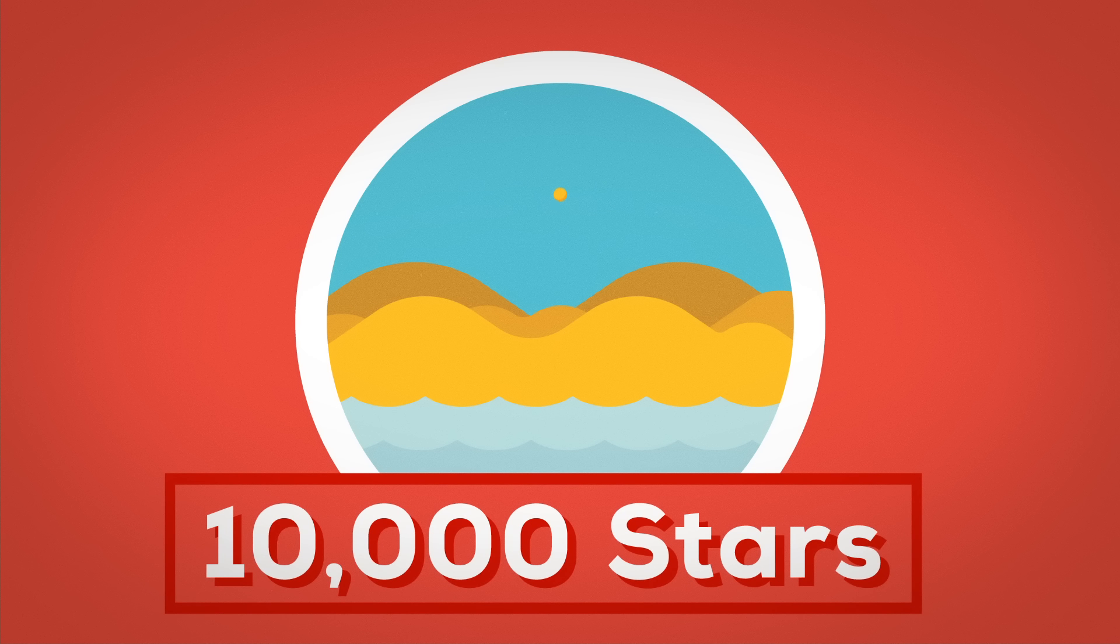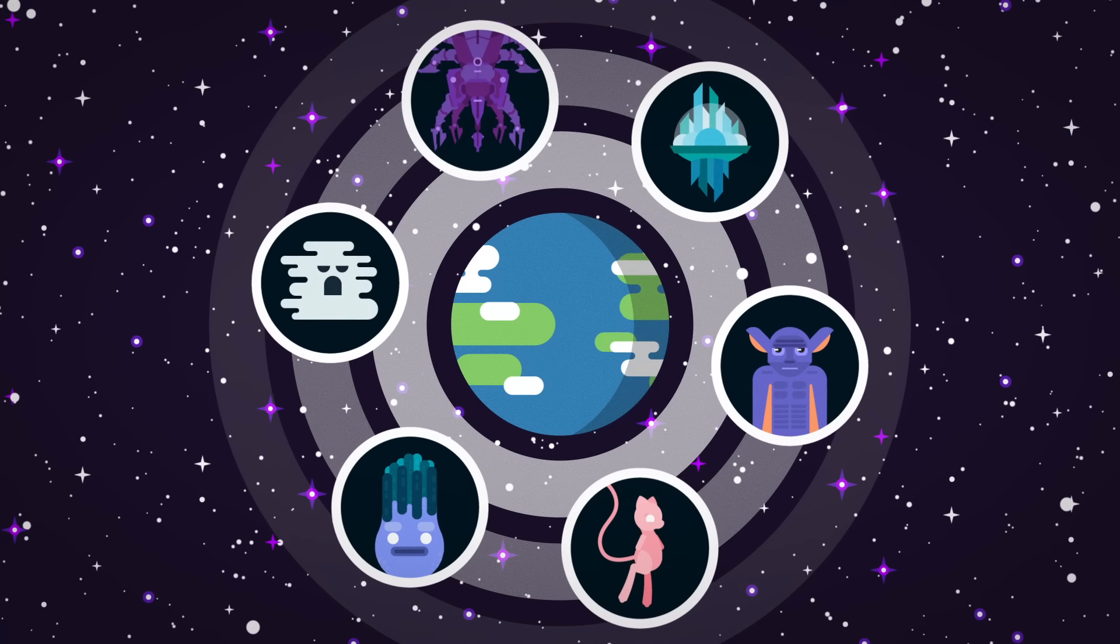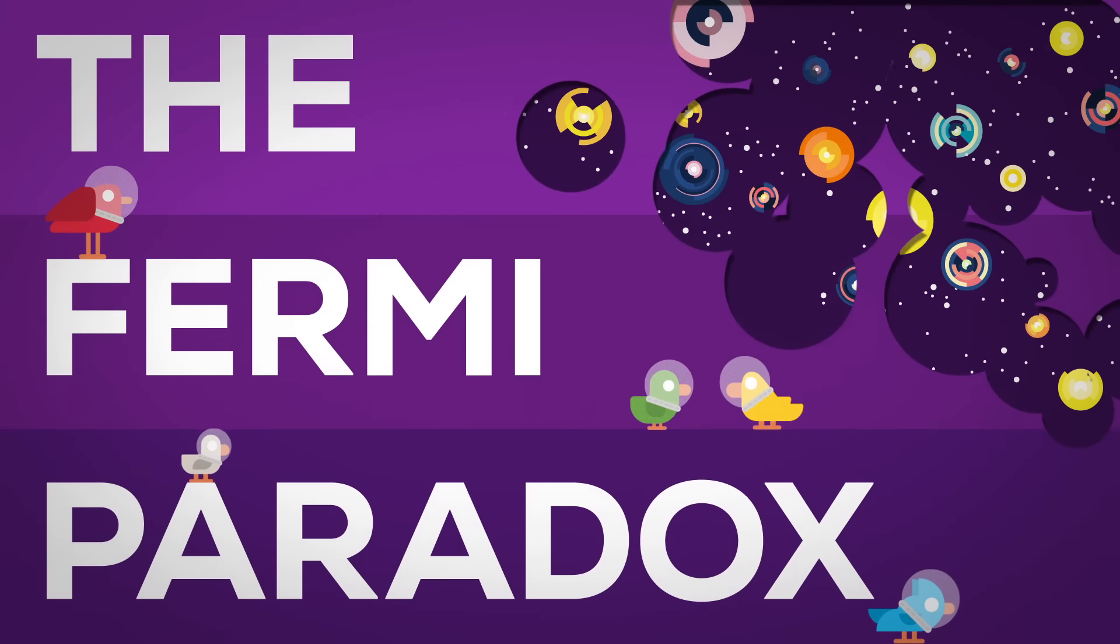There are probably 10,000 stars for every grain of sand on Earth in the observable universe. We know that there might be trillions of planets, so where are all the aliens? This is the Fermi paradox.